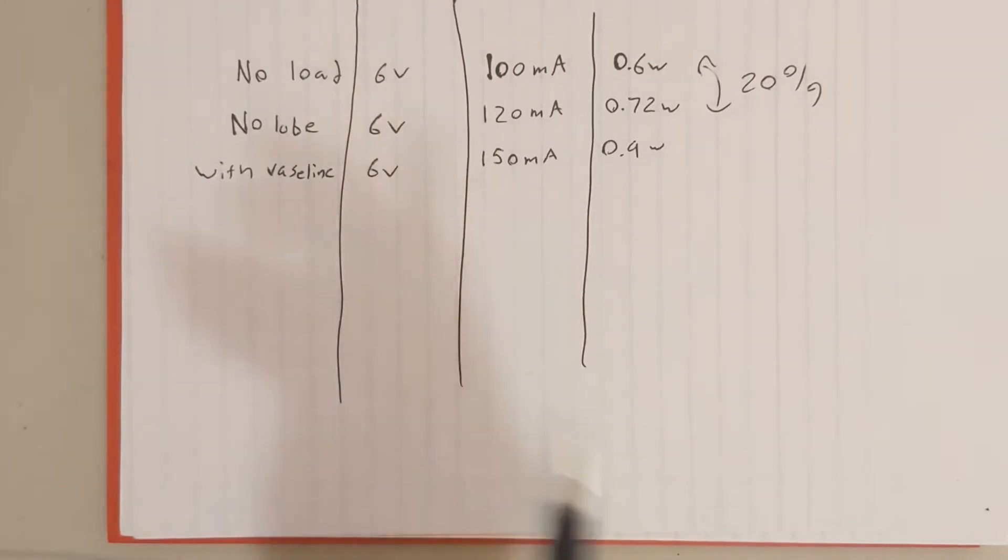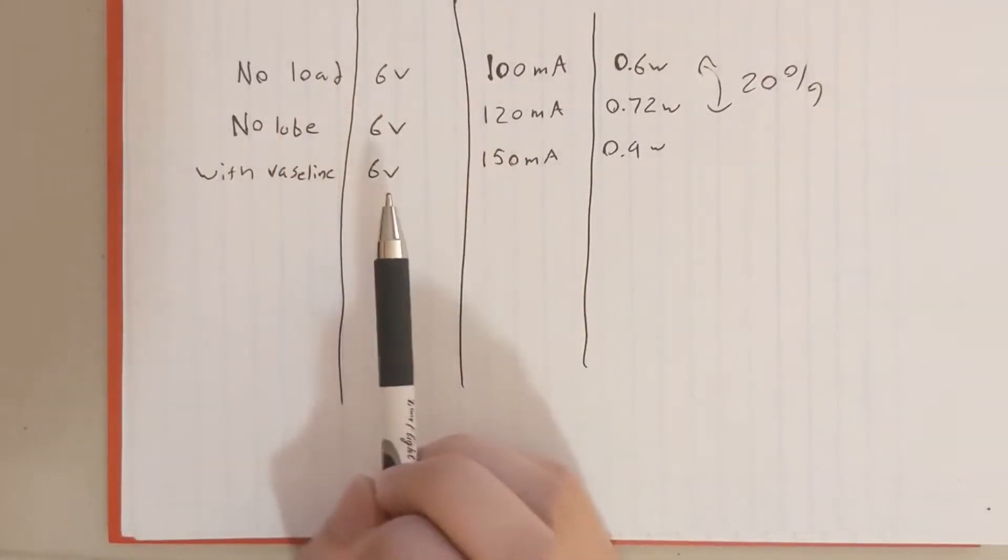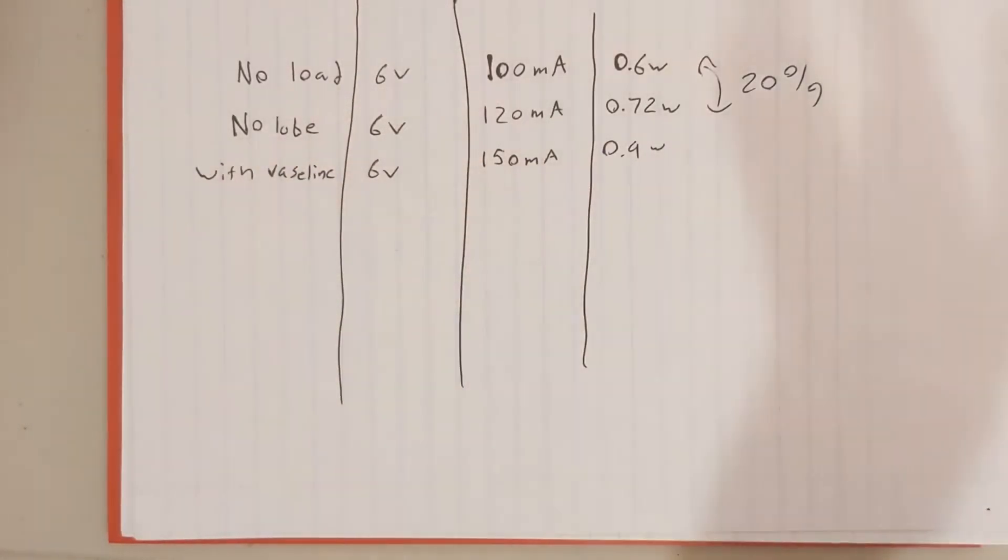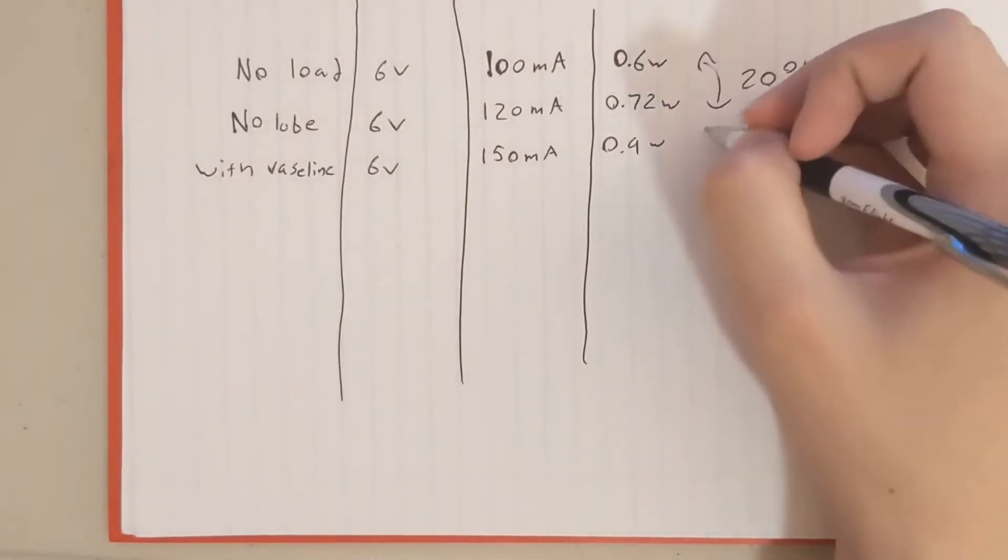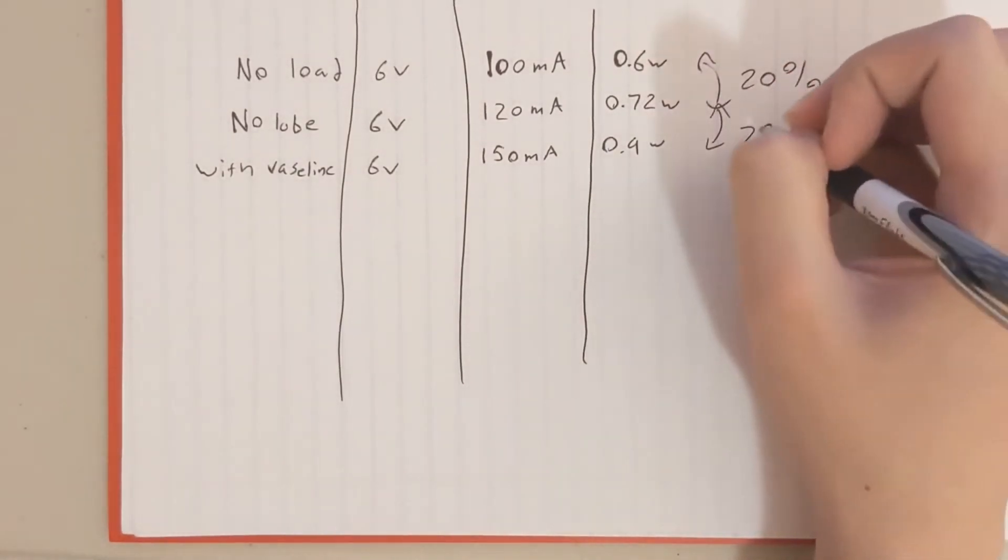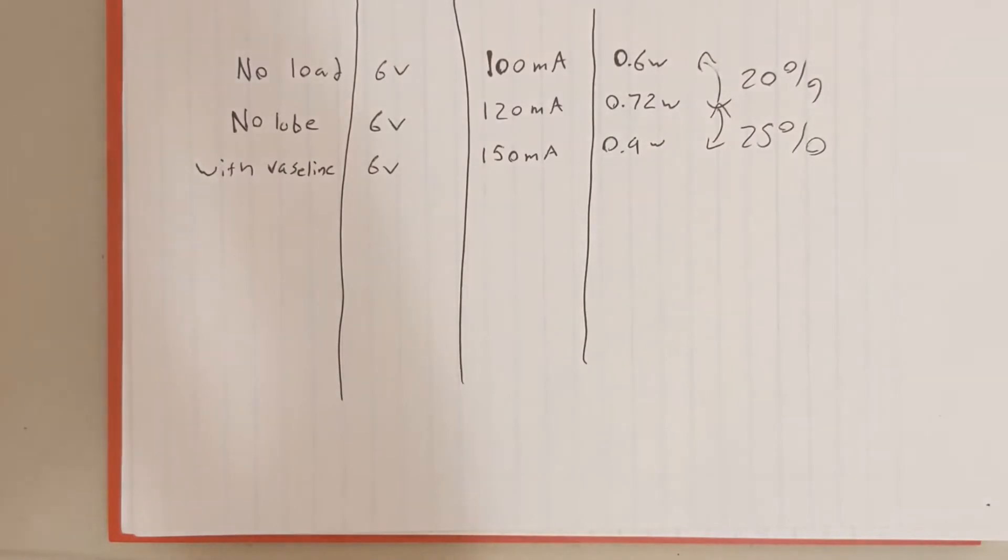This is a little bit more surprising. At 6 volts with Vaseline we draw 150mA, so 0.9 watts. So that's another jump of 25%. So, yeah, it's not as good as I want it.